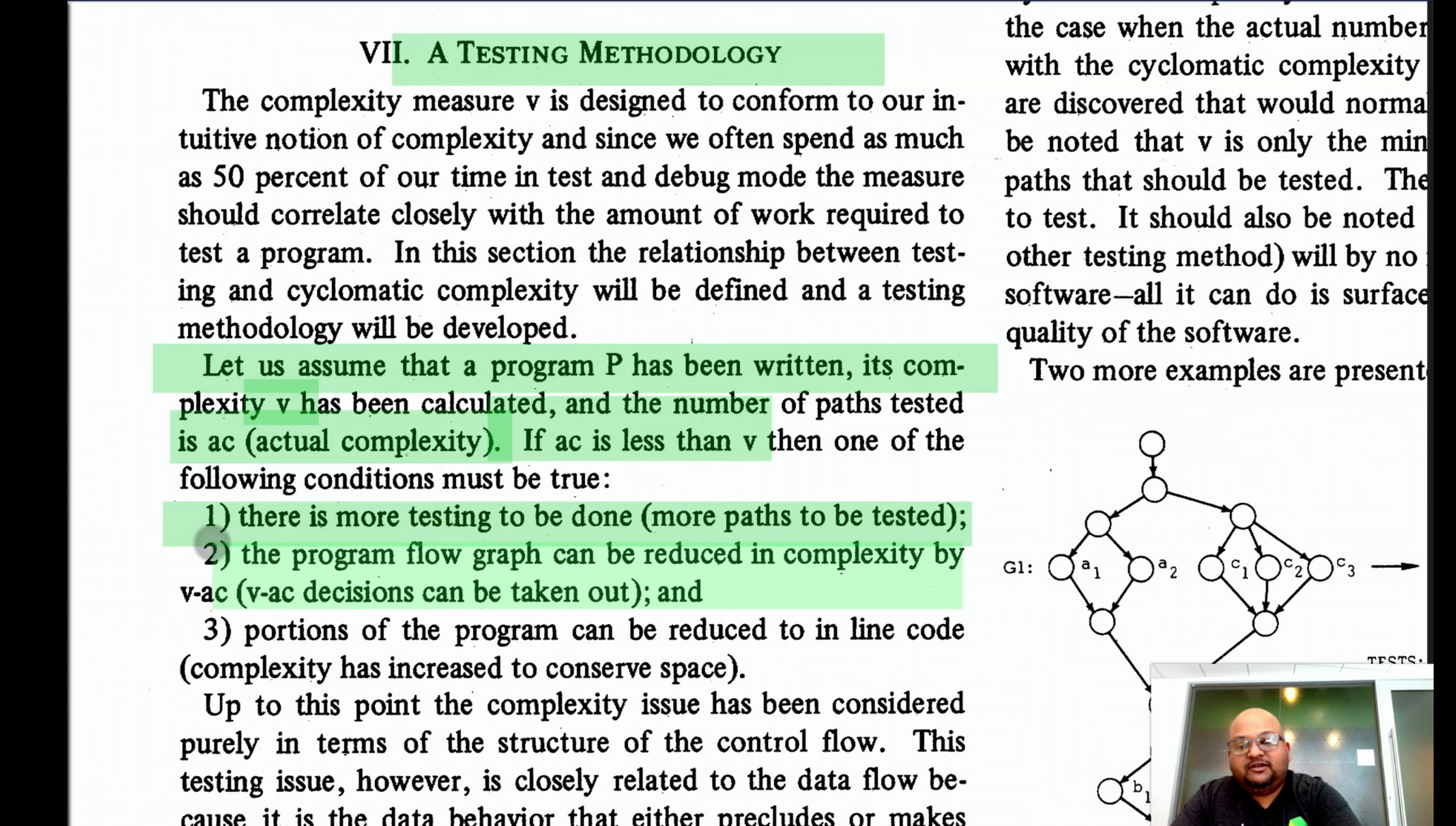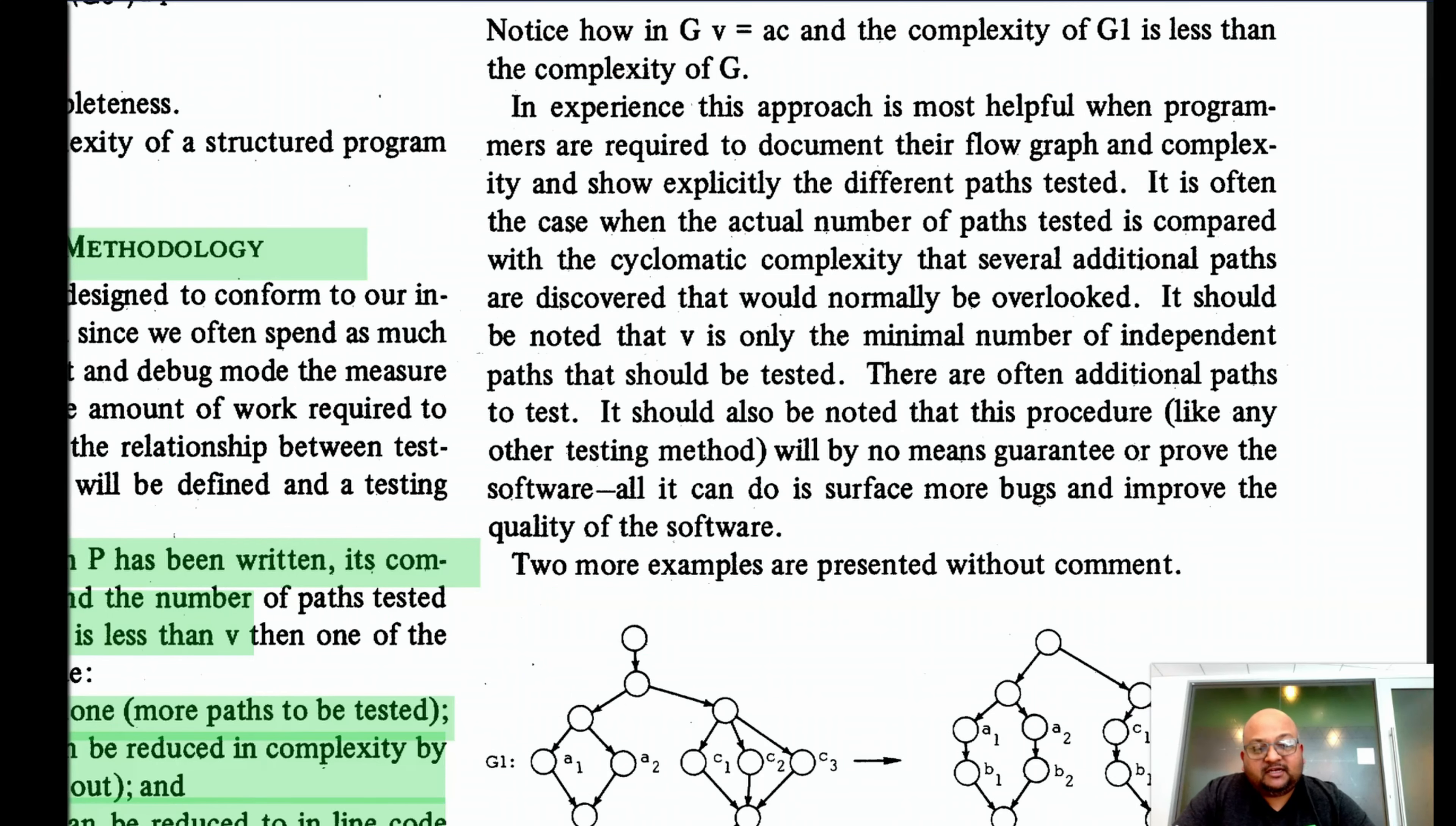Or you can reduce the complexity of your program by reducing some of the decisions in it. Or you can simplify the code to be more linear. And this is where cyclomatic complexity can be used as a helpful guide in testing, because when the actual number of paths tested is compared against the cyclomatic complexity, one can usually discover paths that have not been tested.